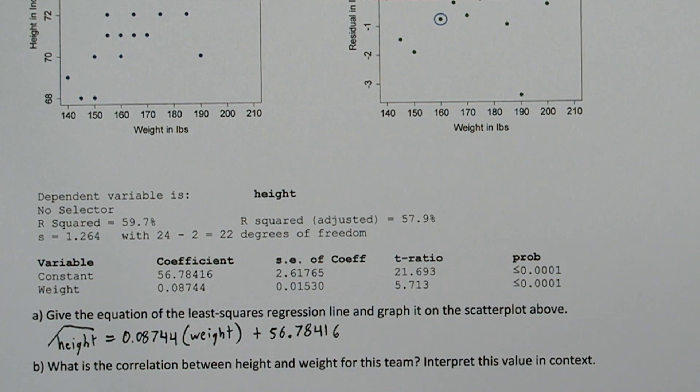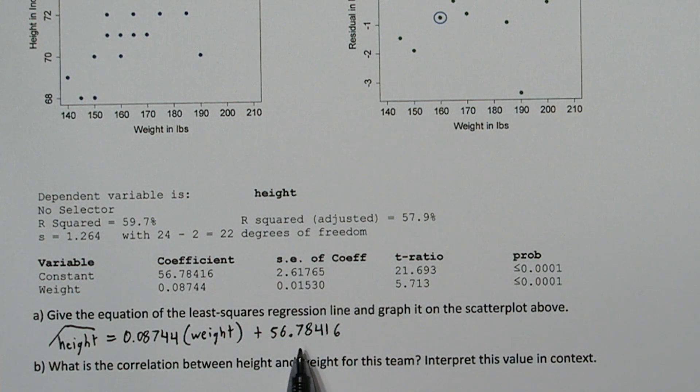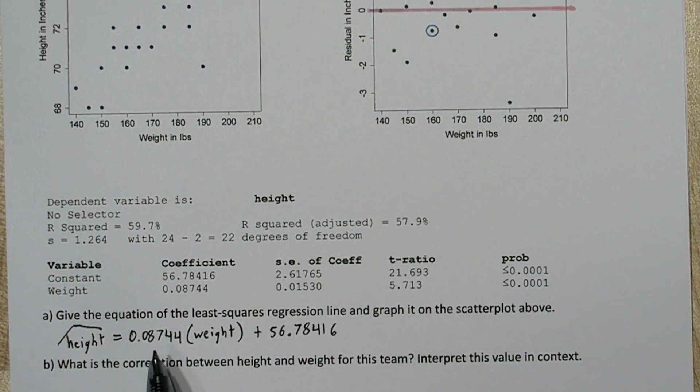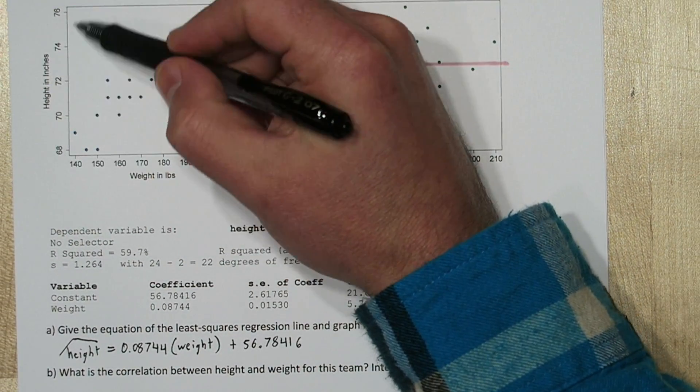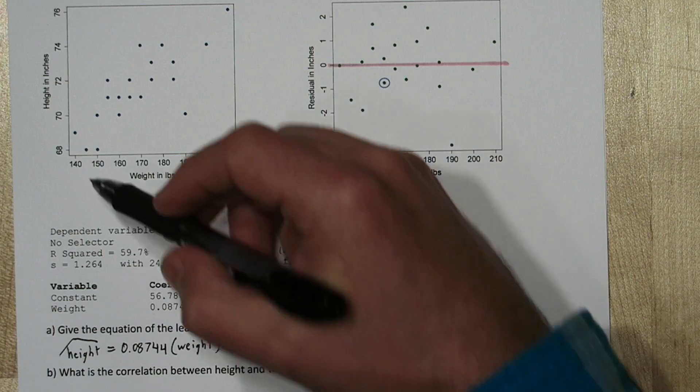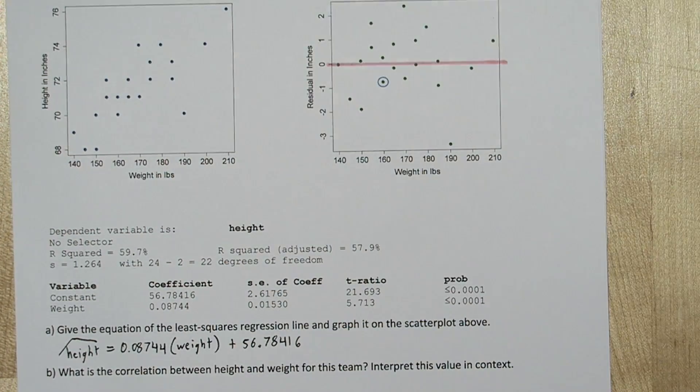Now if you were to graph this using algebra methods, you'd probably start with the y-intercept, 56.8-ish, and then go up this amount for each weight. The problem is when we look at our y-axis, we can't graph the y-intercept. It's not part of our axis here.